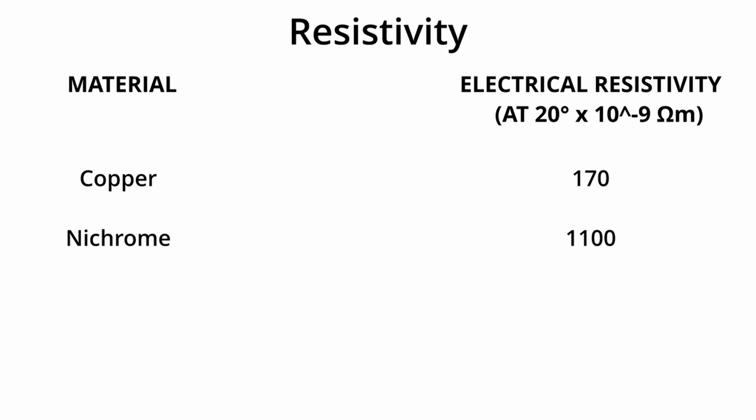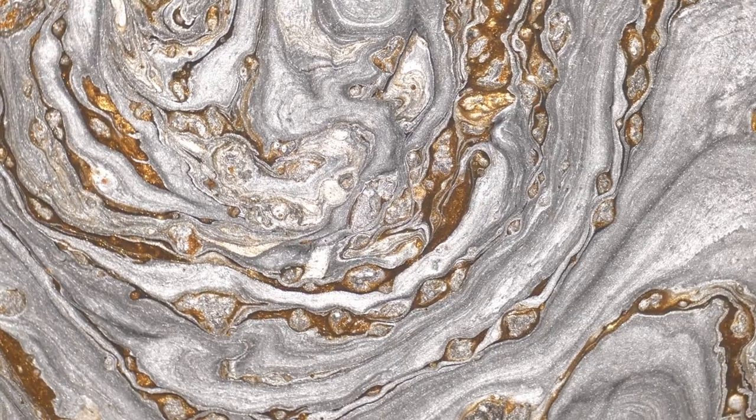The answer is nichrome as it's more resistive, meaning it will heat up more than copper would. And usually nichrome is exactly what the heating element of a toaster is made from. Other features that make nichrome desirable is that it doesn't oxidize easily, preventing rusting.